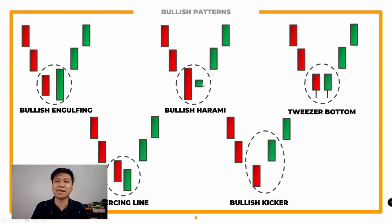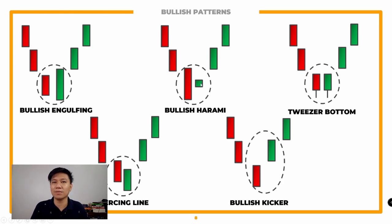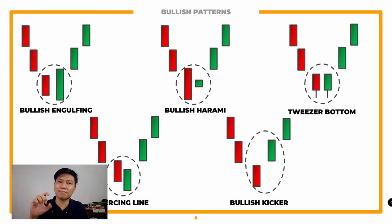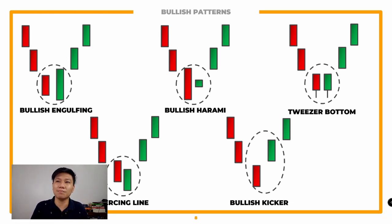Then we have yung bullish harami. Ang rule naman dito, at least 25% yung size nung green candlestick the following day. Kabalik siya ng bullish engulfing — mas malaking red candlestick ang previous day, then meron ka lang at least 25% na maliit na green candlestick. Hindi naman necessary na perfect — pwede rin magkaroon ng wicks. You still need to wait for the following candlestick to confirm na bullish na yung trade.